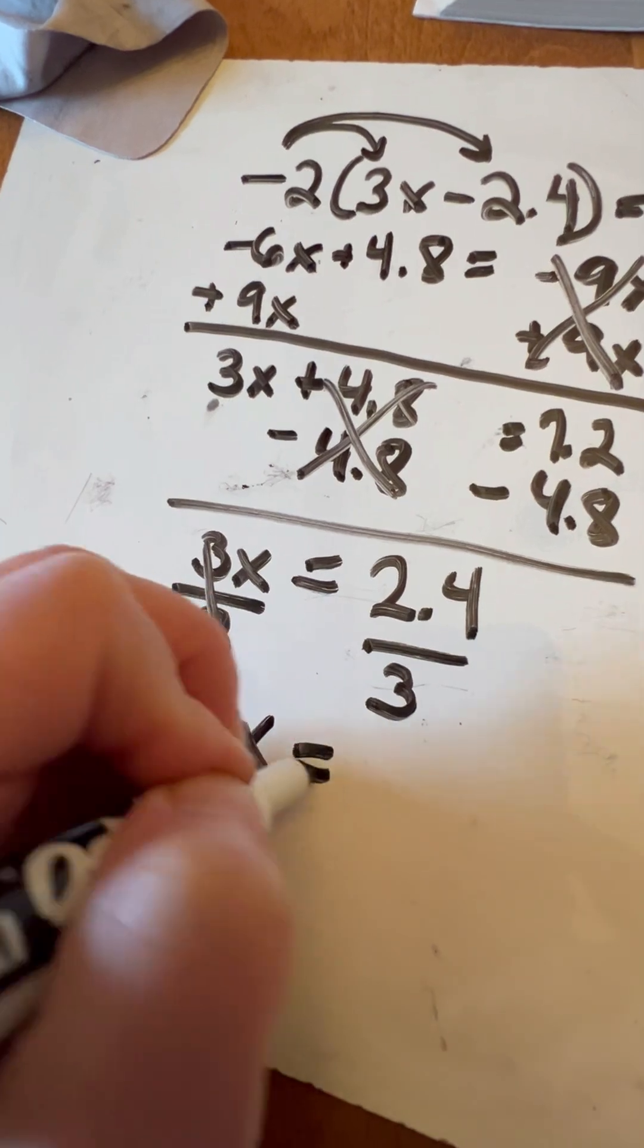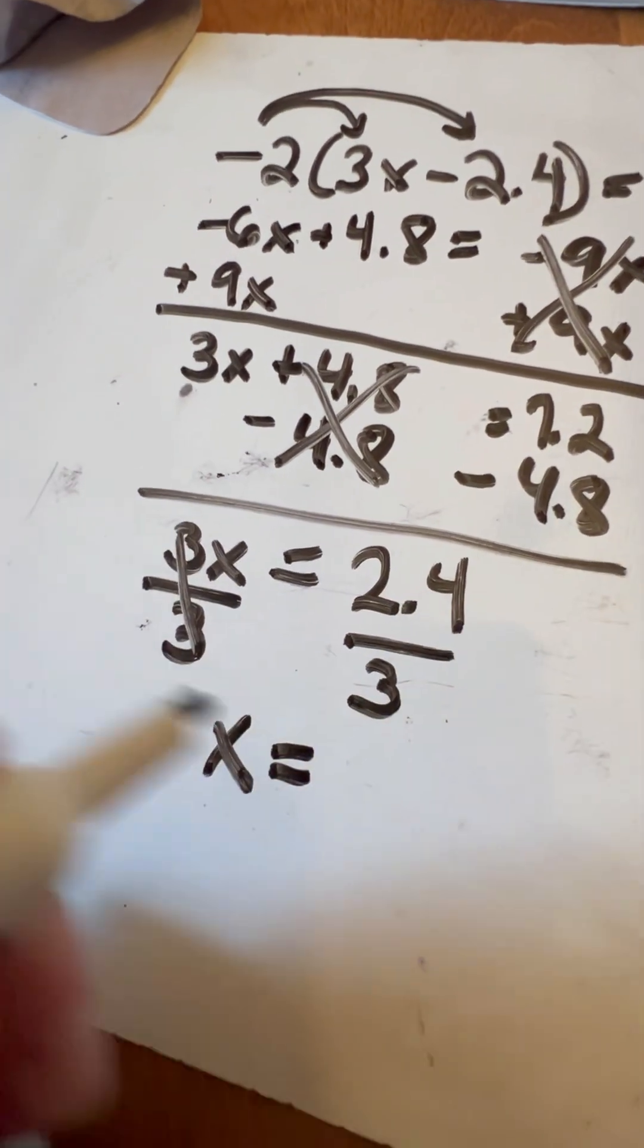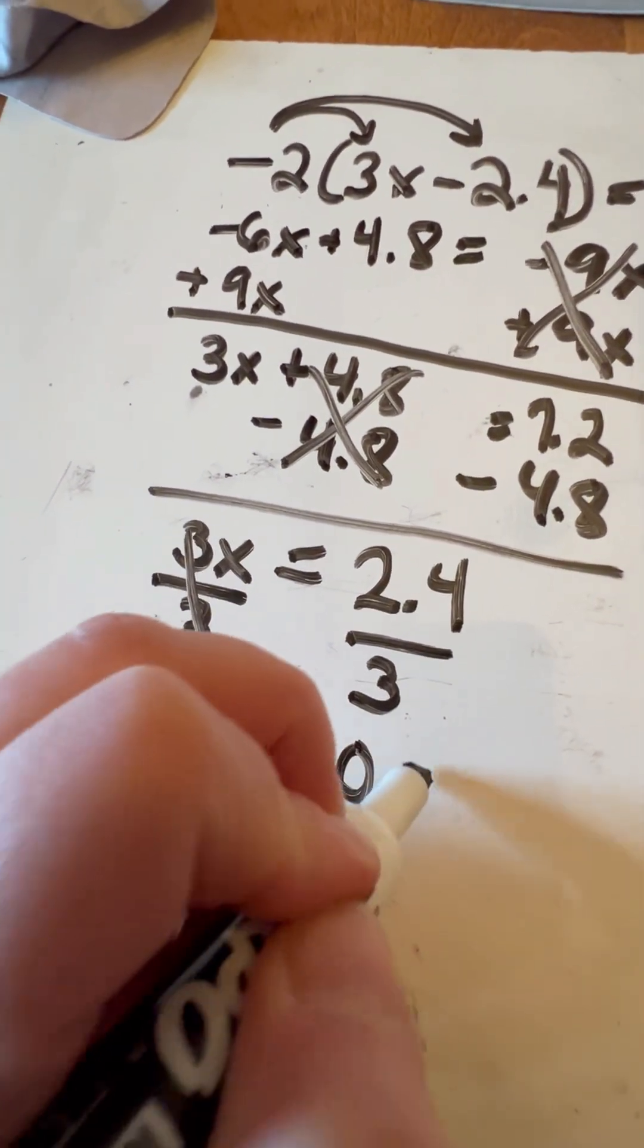That's going to cancel, leaving me with just 1X. And then 2.4 divided by 3 is going to give me 0.8.